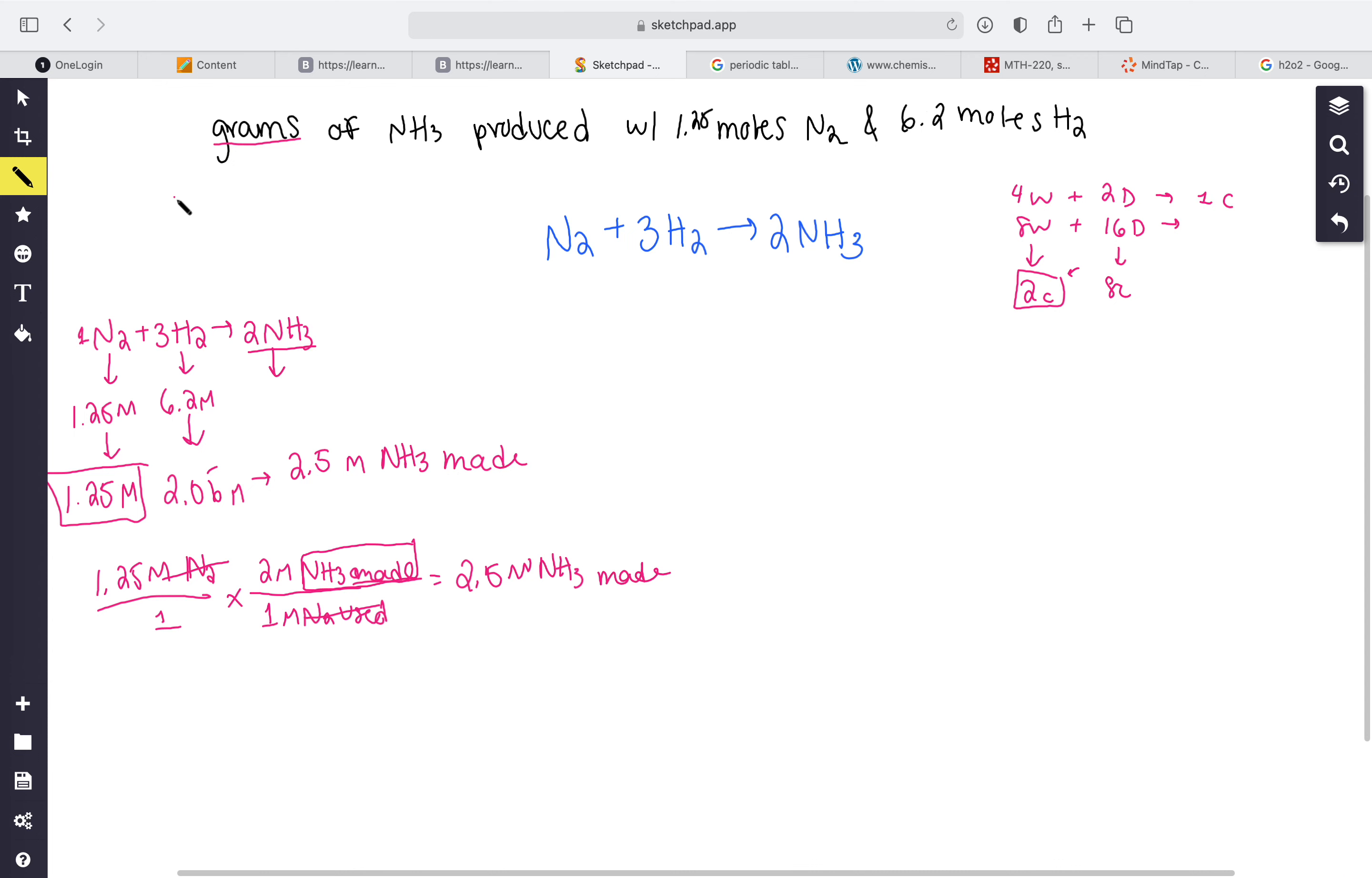But that's not the answer that we want - we wanted our answer in grams, so we're gonna have to do another dimensional analysis. We have 2.5 moles of NH3. We're gonna do the basic one where we're doing 1 mole of NH3.